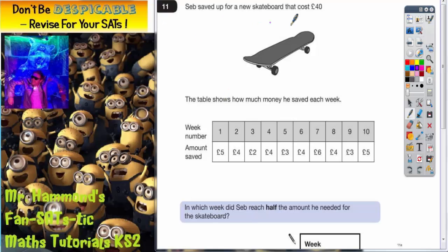Question 11. Seb saved up for a new skateboard that cost £40. The table shows how much money he saved each week.